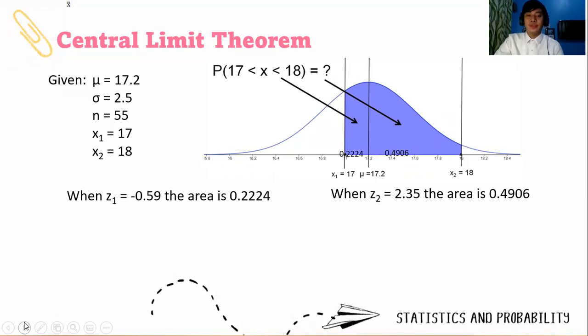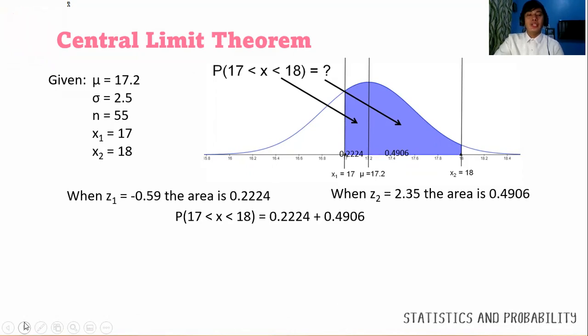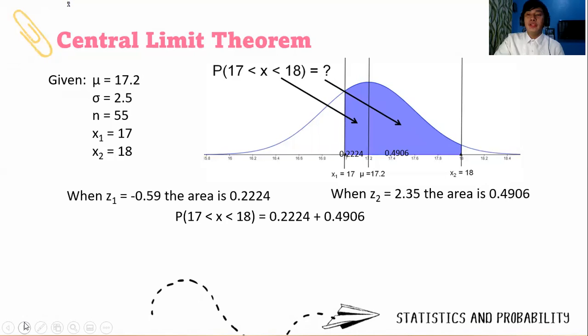As I told you, it is obvious that we will add the probabilities from 0 to x₁ and from 0 to x₂. That is 0.2224 plus 0.4906. Look at how we write the probability notation: the probability that x lies between 17 and 18, or x is greater than 17 or less than 18. The sum is 0.713.